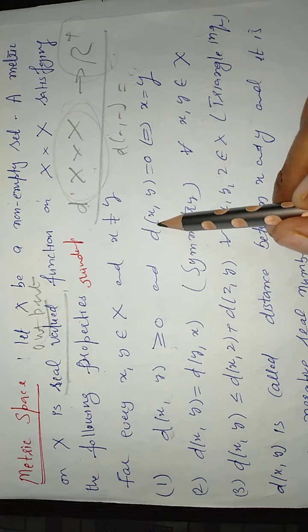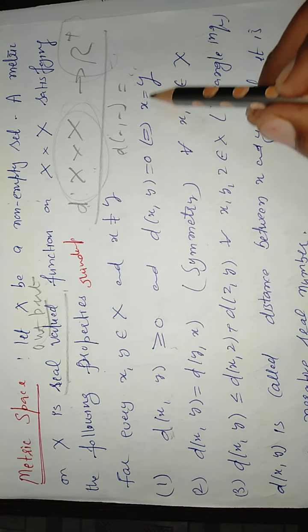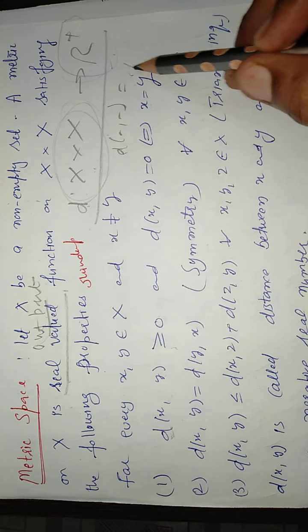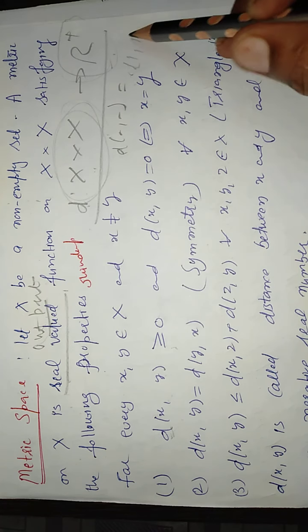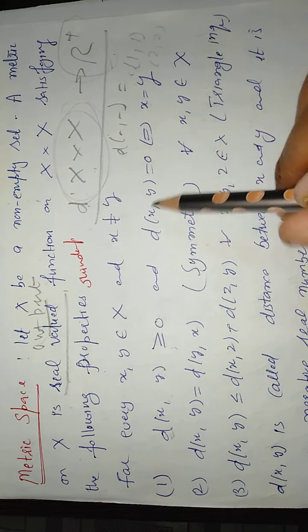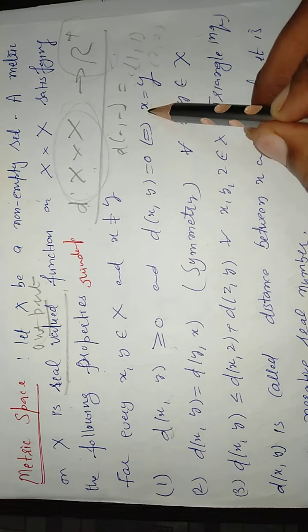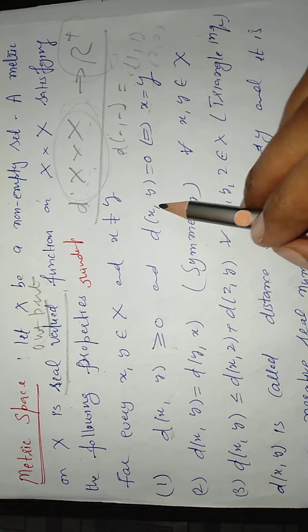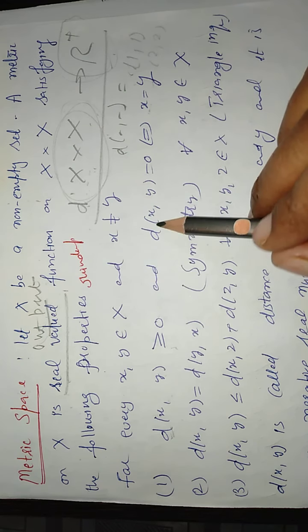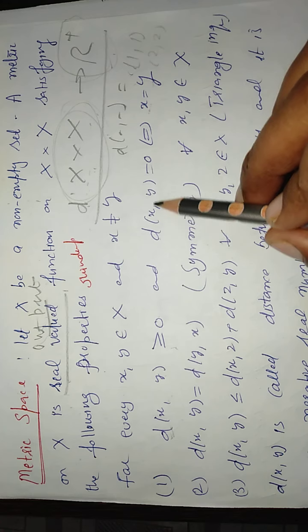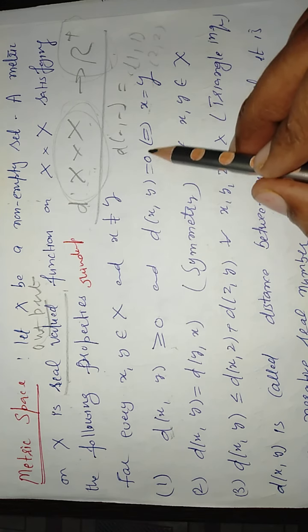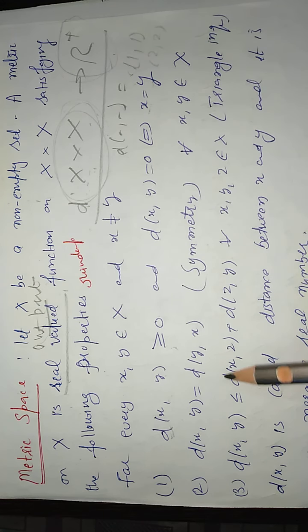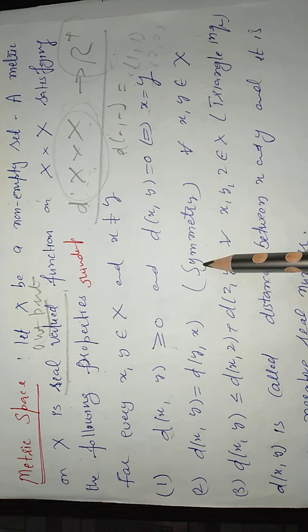Whenever the points x and y are the same point, the distance d(x, y) is always equal to 0. And d(x, y) is equal to d(y, x), which means it is symmetric for every x and y.